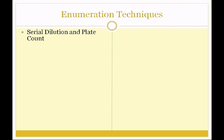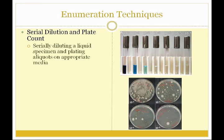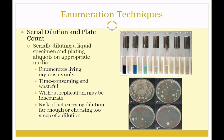Serial dilution and plate count is what we're going to be doing in lab. We serially dilute a liquid specimen and plate aliquots on an appropriate medium. The advantage is it enumerates only living organisms — something dead won't grow. However, the organism has to be able to grow on the media chosen. This is a time-consuming and wasteful process, since we may create six or seven plates but only count one. Without adequate replication the count can be inaccurate, and there's a risk of not carrying the dilution far enough or choosing too steep a dilution, causing you to miss the appropriate plate.